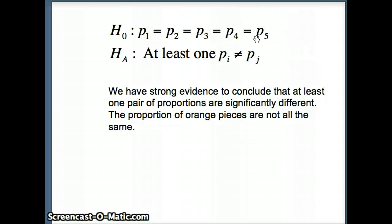If we assume the population is the entire production day, we are going to assume that these five production days all had the same overall proportion of orange pieces. But we rejected H₀. H₀ is thrown out, which means we have to support Hₐ, which tells us at least one pair of proportions are different.